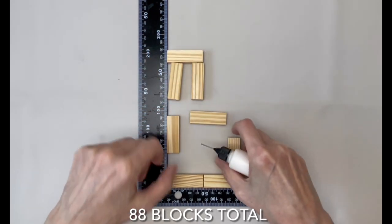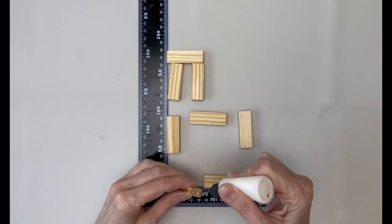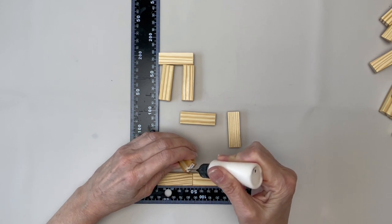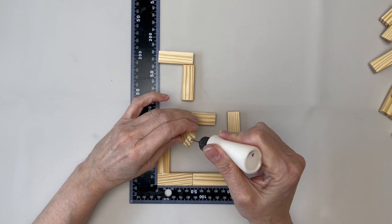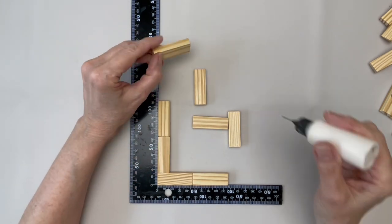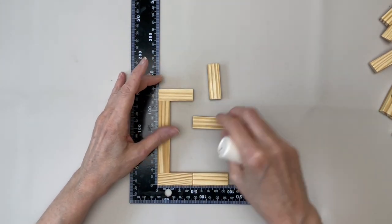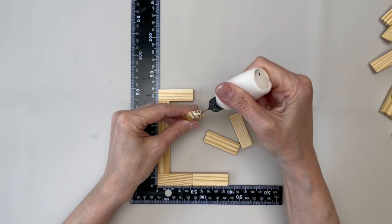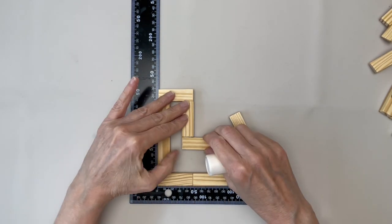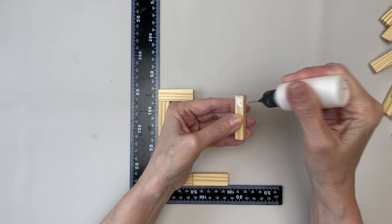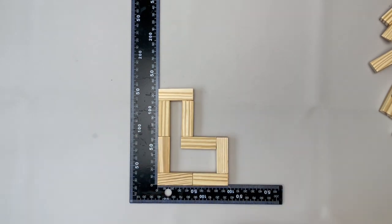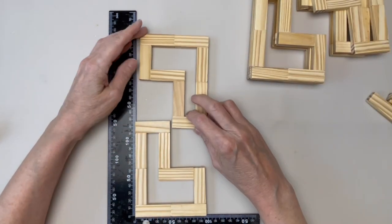I started with eight blocks, gluing them in an L-shaped pattern. I made a total of eight of these. I glued two L's together, like this, for each side.